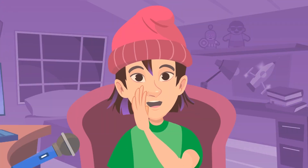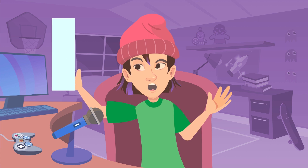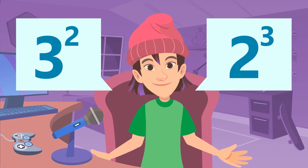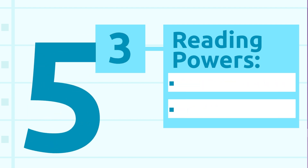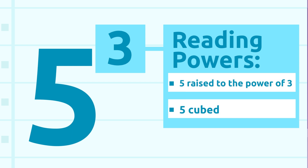Here's a little secret: did you know that when a number is raised to the power of two or three, it can be read differently? When a number is raised to the power of two, we can also say 'squared' — for example, four squared. When a number is raised to the power of three, we can say 'cubed' — so five raised to the power of three is five cubed. We use these expressions a lot, so don't forget them!